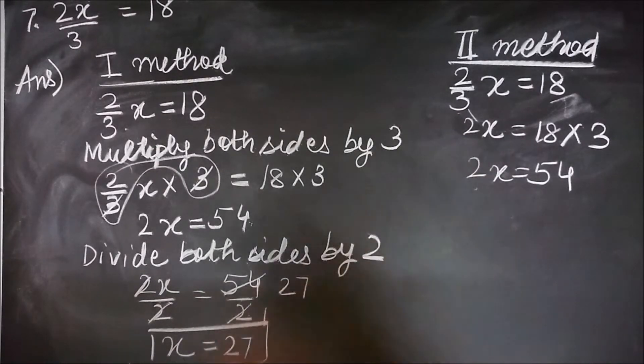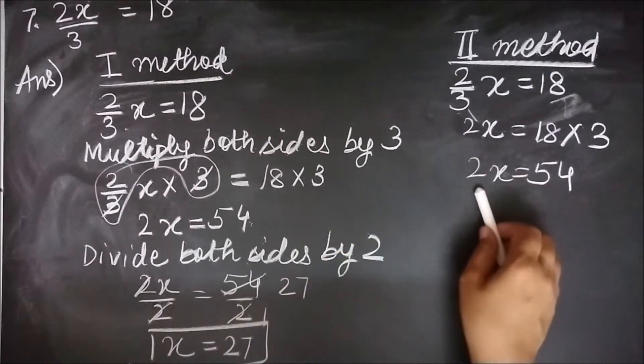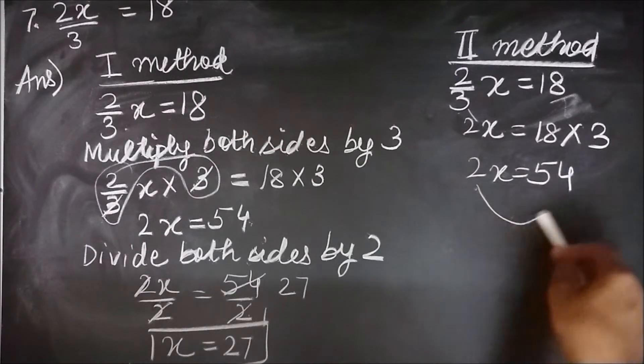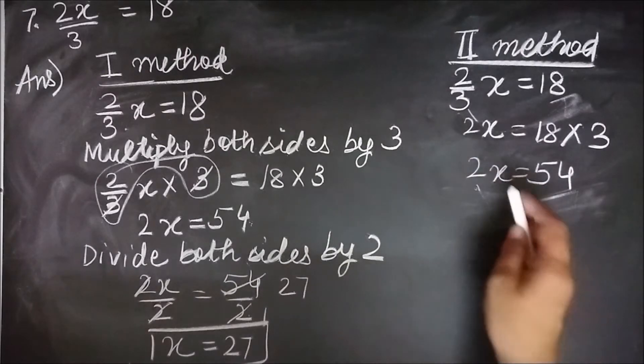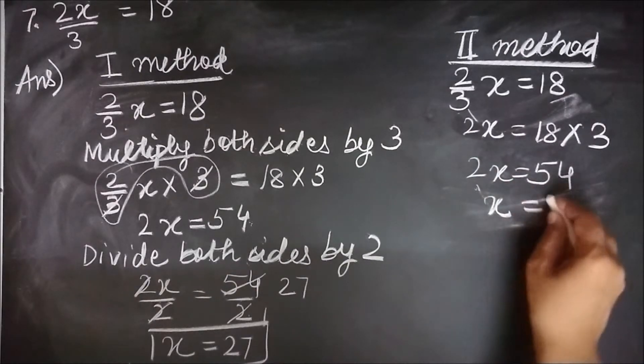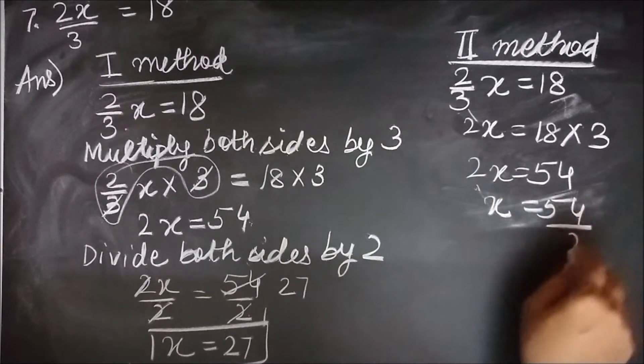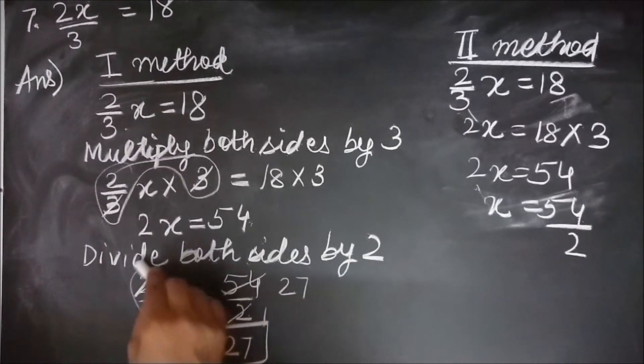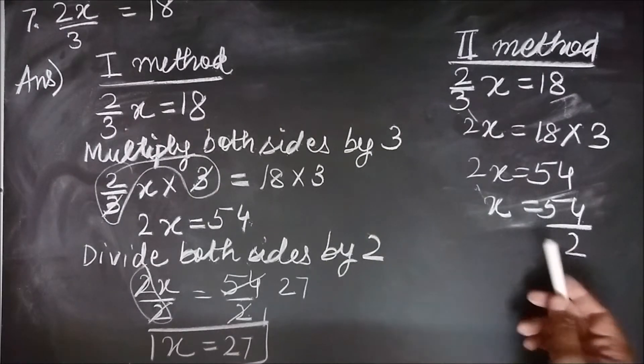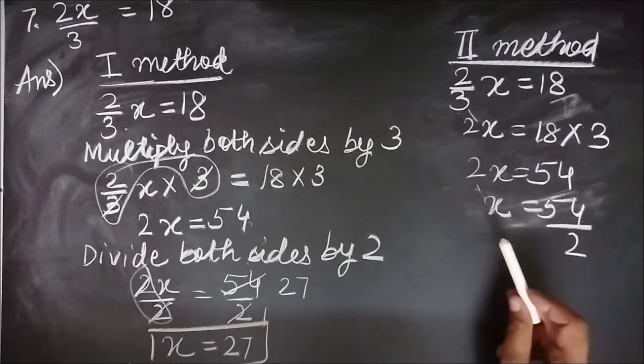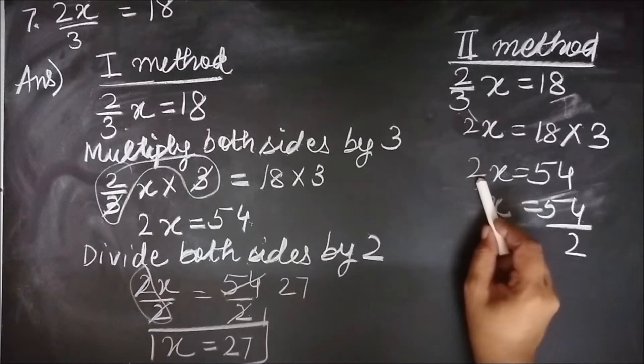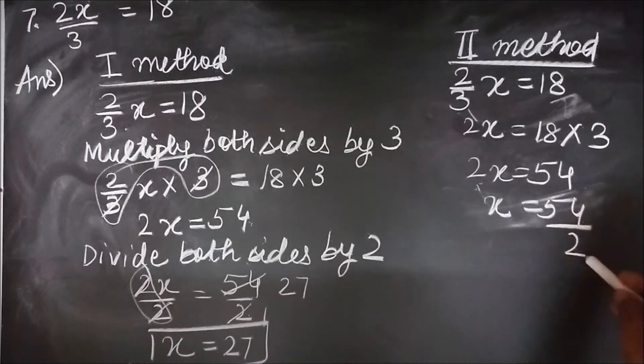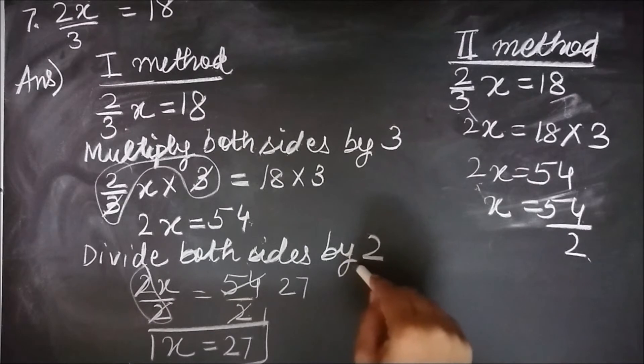Next, I need to remove this 2. 2 is getting multiplied here. So when I remove this 2, I need to get it here into division. So x equal to 54 by 2. Same thing we did here, just that I have skipped this part. And now you know why when a number is getting multiplied on one side and goes to the other side, it gets into division. This is the reason.